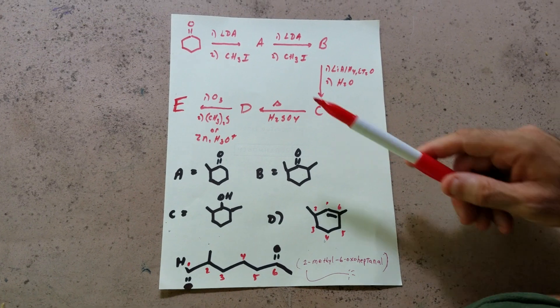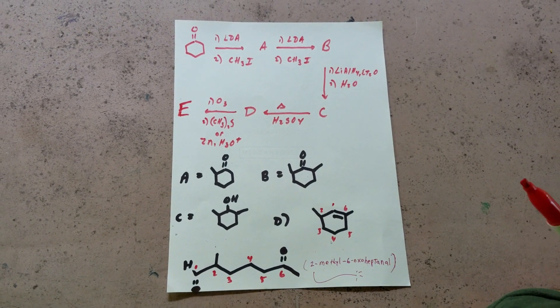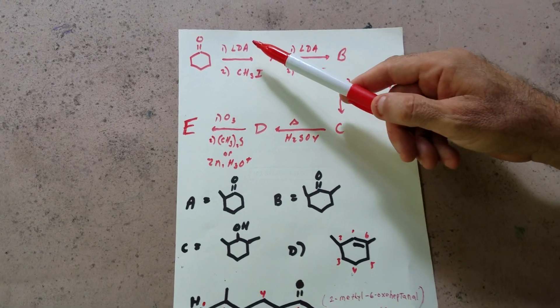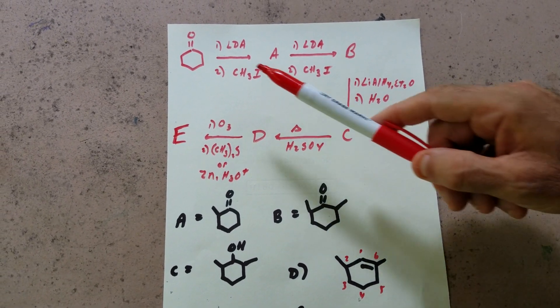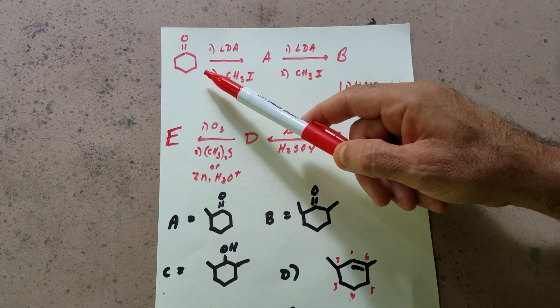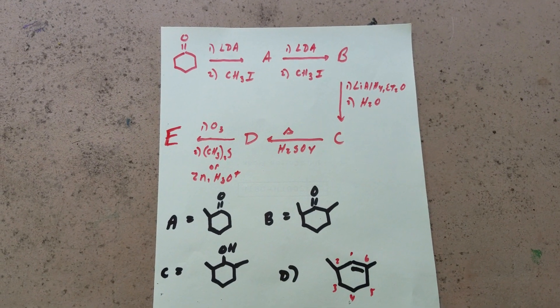What I'm going to do in the first step here is take cyclohexanone and treat it with LDA. That's going to remove the alpha hydrogen and we're going to do a simple SN2 and put on a methyl. And that would be A.